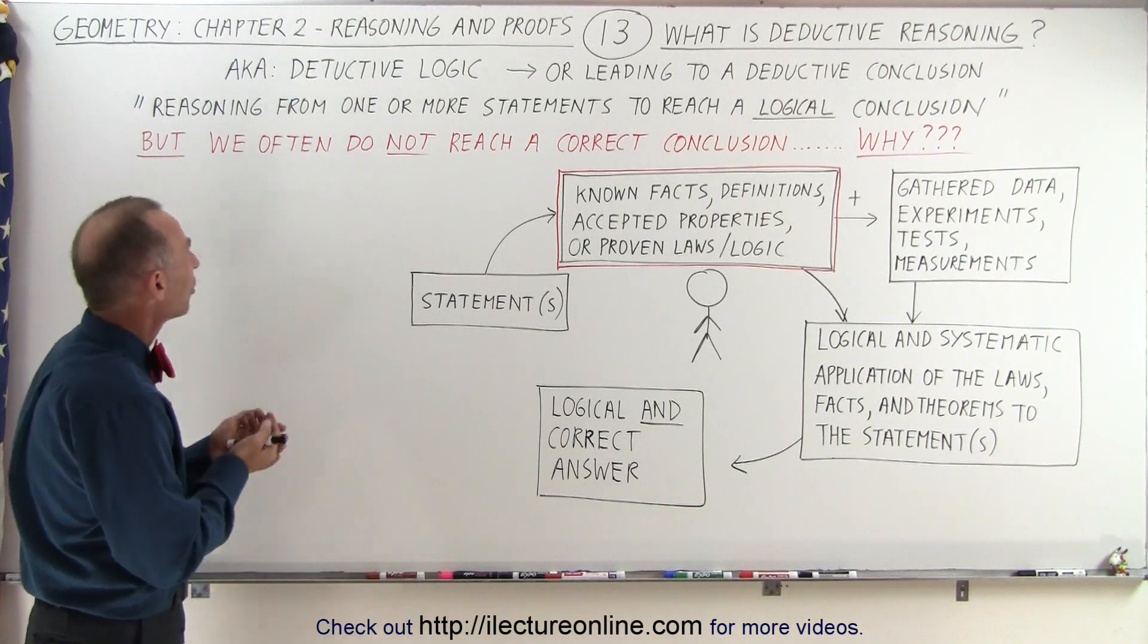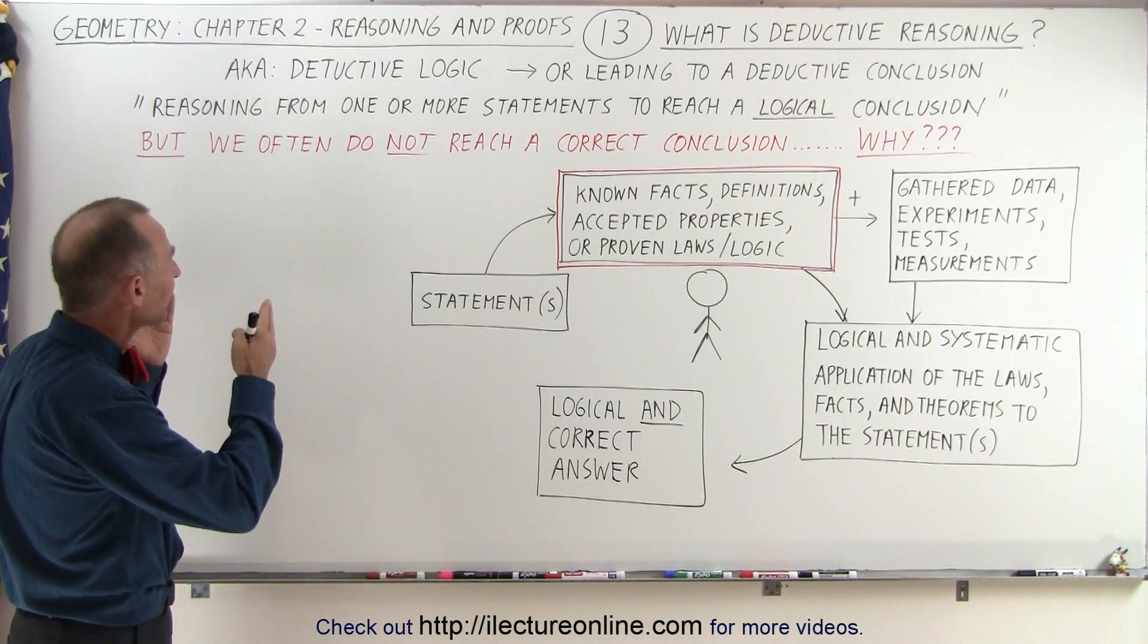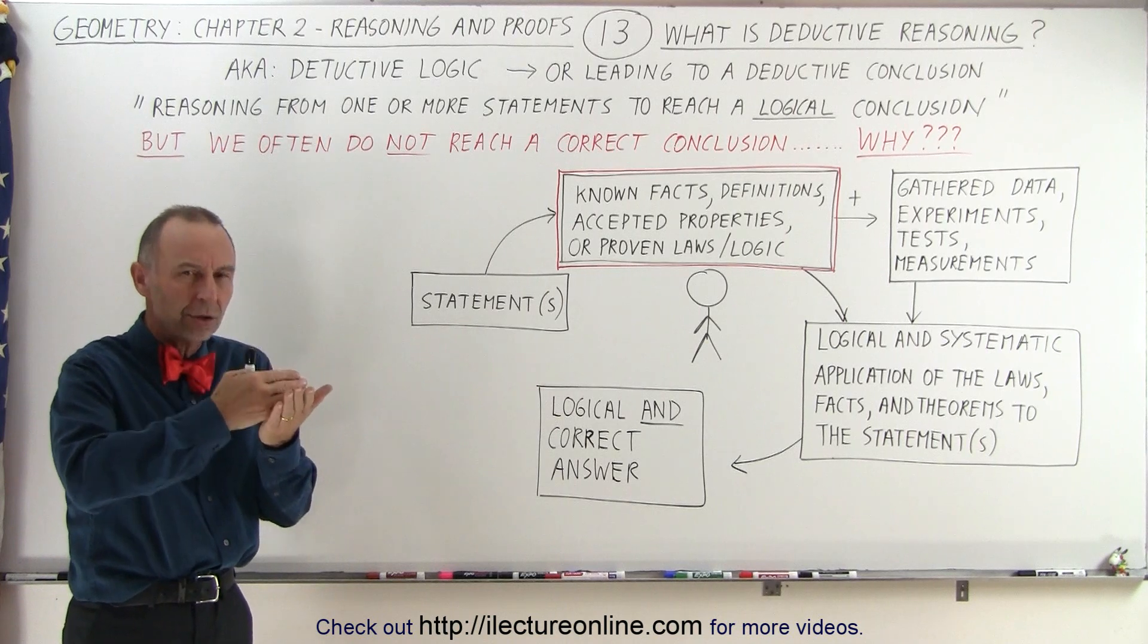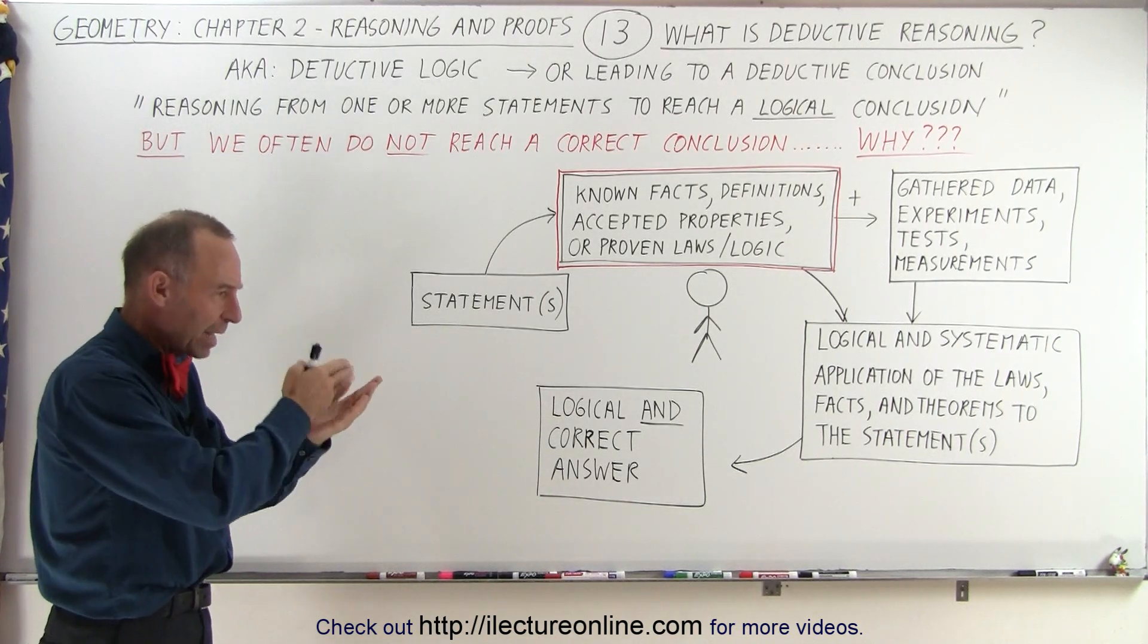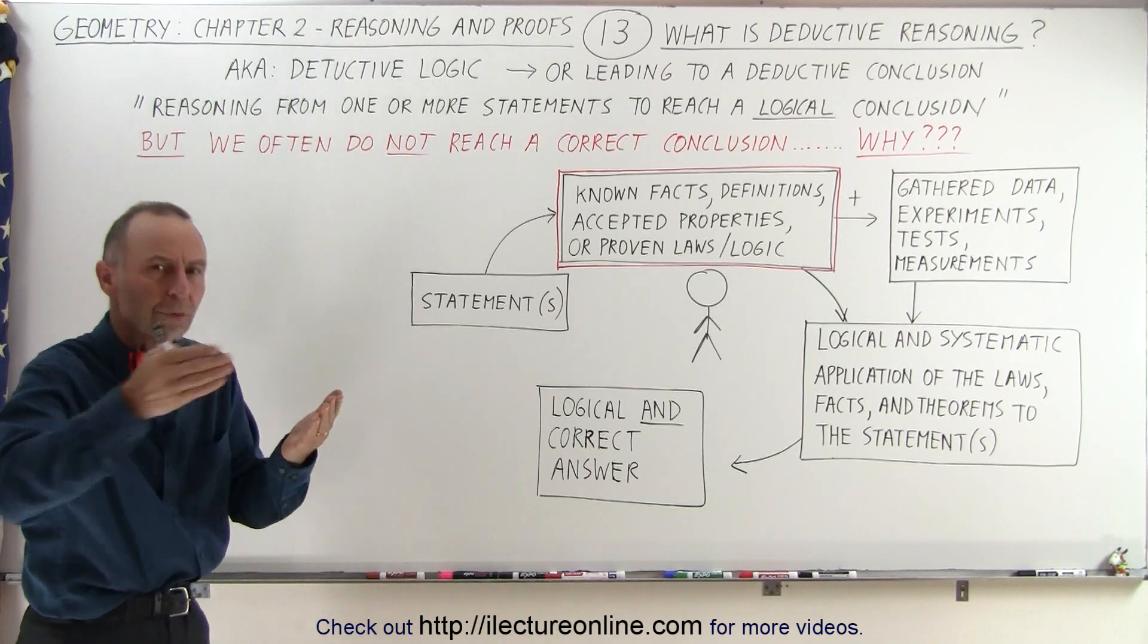Well, one way to look at it is that we can think of it as deductive logic. So we're trying to follow a step of logical arguments. Start from A to B to C. We have this logical progression of thought.